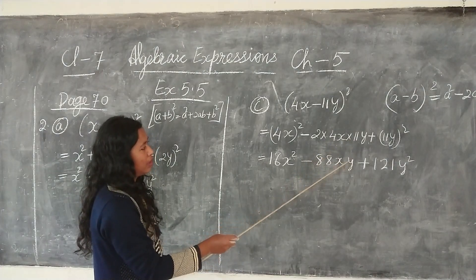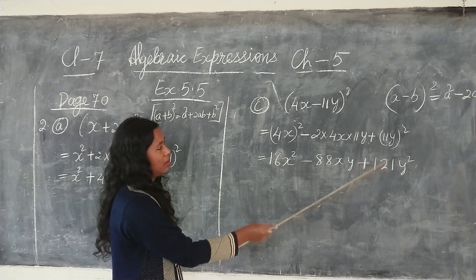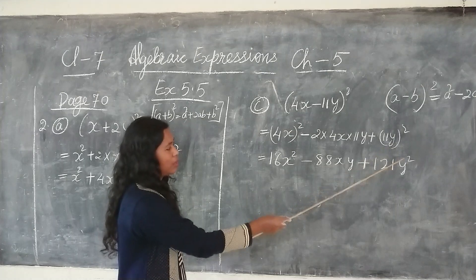Then x into y that we want to bring, then plus 11 into 11 is 121, y into y is y square.